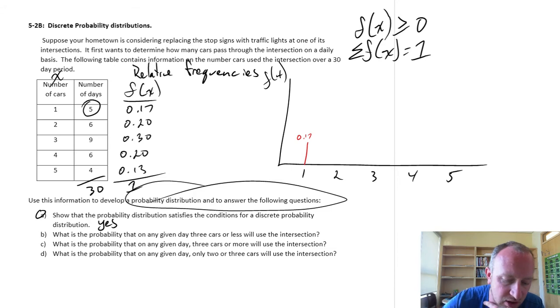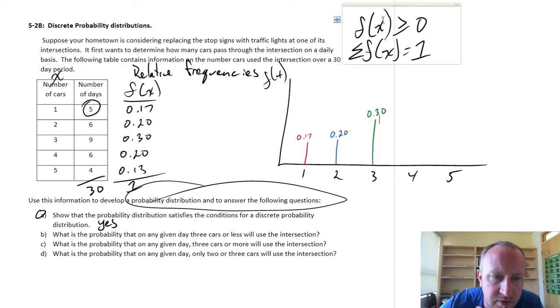Probability of seeing two cars, 0.20. So, a little bit more than 0.17. 3 cars, now we're up to 30. So, that's coming up here, 0.3. 4 cars, now we're back down to 0.20. So, this one is about exactly the same, 0.2.